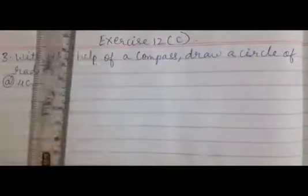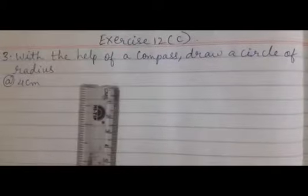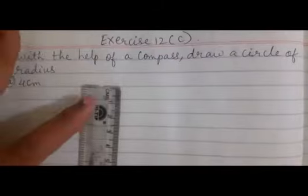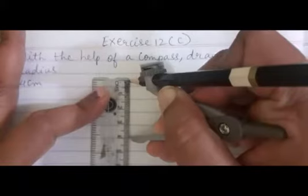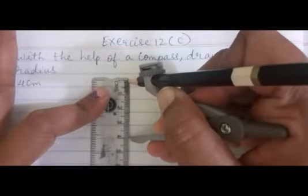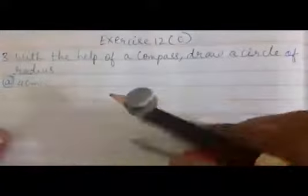Now, first of all, what we have to do, it is told to take the 4 cm. So, on the scale, we will measure 4 cm. From 0 to 4. And then, we will keep it at one edge and take the pencil around.